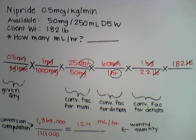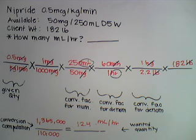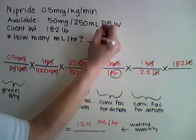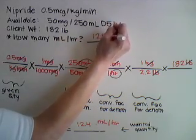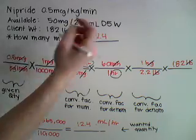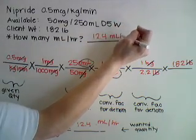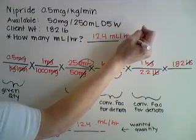And this is the solution to our problem. Nipride 0.5 micrograms per kilogram per minute, with an available concentration of 50 milligrams per 250 milliliters of D5W, on a client who weighs 182 pounds, equals 12.4 milliliters per hour.